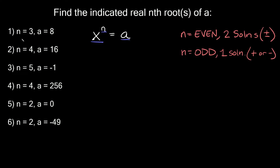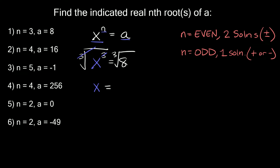Let's start with the first problem. Here n is equal to 3 and a is equal to 8. So we have x raised to the third power equal to 8. We have an odd exponent, so we should expect only one solution. To solve for x, we take the cube root of both sides — the cube root and the cubed exponent cancel out — leaving x equal to the cube root of 8, which is positive 2.